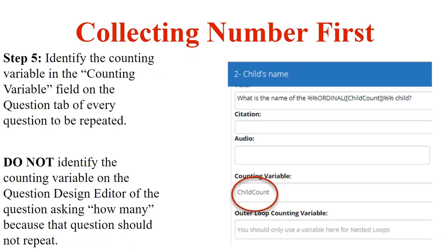On each of the pages that will be repeated — in this example, child's name and child's birth date — you put the counting variable in the counting variable field in the question text section. This tags it as a repeated question. You'll also see the outer loop counting variable field, which is for nested repeat loops. Nested repeat loops are something the vast majority of you won't be using — they are loops within a loop and require a special hack since they're not natively supported by AdaJ Author.